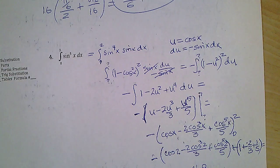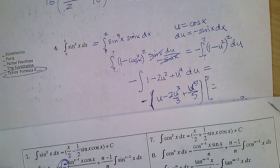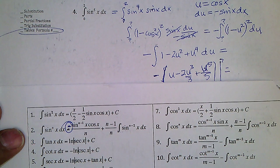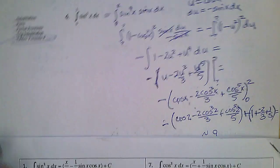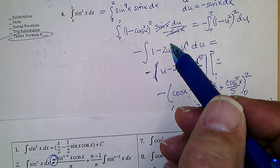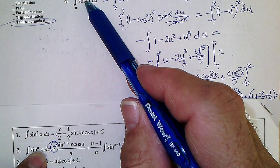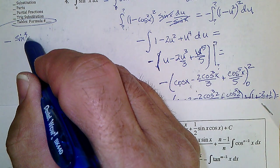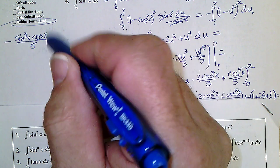Expanding: −(1 − 2u² + u⁴) du. Integrating gives −(u − 2u³/3 + u⁵/5). Converting back to x: −(cos x − 2cos³x/3 + cos⁵x/5), evaluated from 0 to 2. The answer comes out to approximately 0.9.